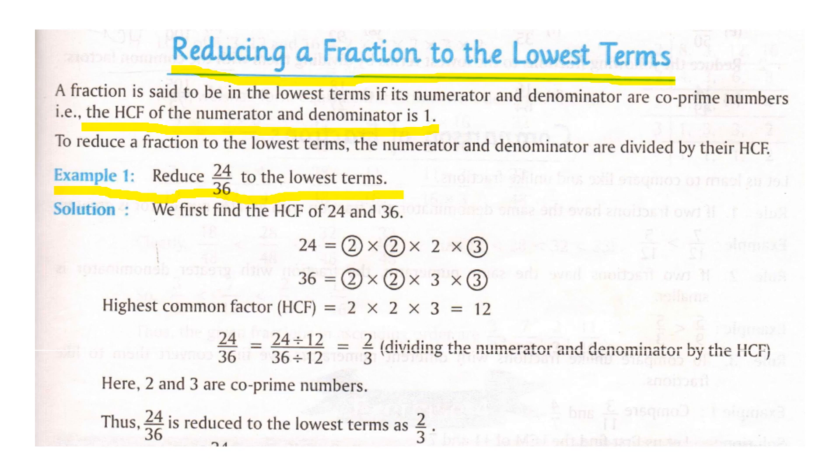Either long division method or prime factorization method. So after prime factorization the factors of 24 are 2 into 2 into 2 into 3. Factors of 36 are 2 into 2 into 3 into 3. Now what is the highest common factor?